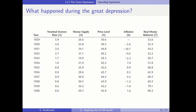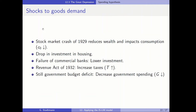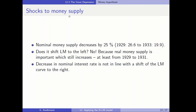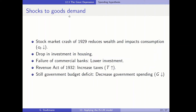What is driving the recession? Let's sort the different sources into whether the shocks occur to goods demand or whether shocks occur to money supply. Shocks to goods demand: first of all, we have to mention the stock market crash of 1929, which reduced wealth and of course impacted consumption. In our IS-LM model, we can reduce the autonomous component of consumption — the IS curve would shift to the left and the economy ends up in a recession.